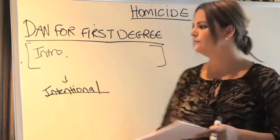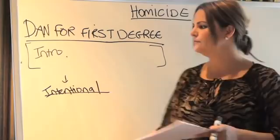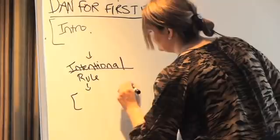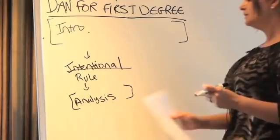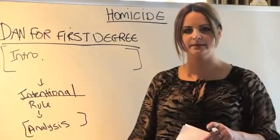First, we need an intentional killing — one done with a specific intent to take the life of another. It seems straightforward, but you still must give a rule for specific intent. You give the rule, skip a line, and your analysis. Don't be conclusory here — don't say that Dan possessed the specific intent to kill because he killed him. That's not going to be a concise and thorough analysis. Give some setting and background, assuming the facts give you that.